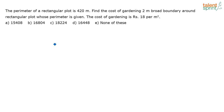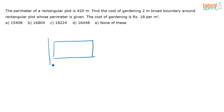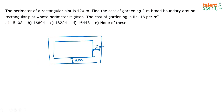What is given in this question? There is a rectangular plot whose perimeter is 420. We need to find the cost of gardening a 2-meter broad boundary around the rectangular plot. So there is a boundary of 2 meters wide around it. The cost of doing gardening there is 18 rupees per meter squared.